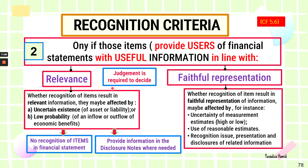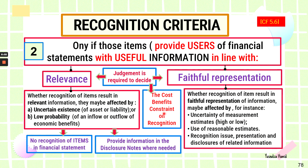What is more important is the management judgment required to decide whether items — assets, liabilities, equity, income, and expense — meet the relevance criteria and fulfill faithful representation as fundamental qualitative characteristics. At the same time, a company also needs to consider the cost-benefit constraint on recognizing items of liabilities, assets, income, expense, and equity — meaning the benefits should outweigh the cost of providing the information from the perspective of the reporting entity.